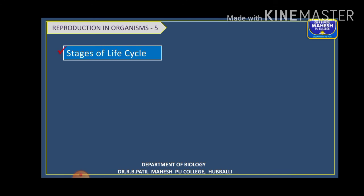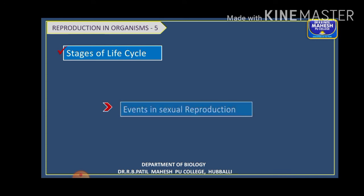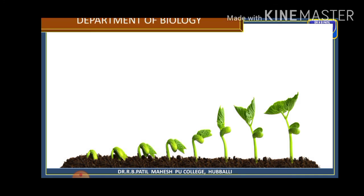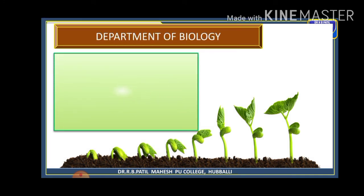This is about the stages of the life cycle. There are three phases: the juvenile phase, the reproductive phase, and the senescent phase. This can be a three-mark question, and the differences between seasonal and continuous breeders, as well as the differences between the estrus cycle and the menstrual cycle, are important. In the next module, we will continue with the events in sexual reproduction. Thank you everyone.